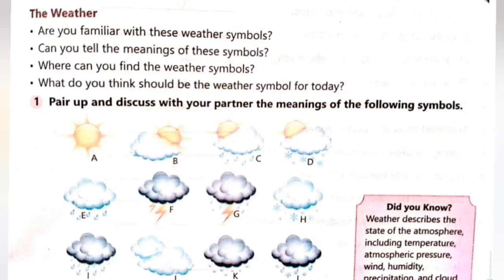Agar left side pe aap dekhen, A se hum start karte hain jahan pe sun bana hua hai, to yeh hamara symbol show karta hai sunrise ko, yani ke sunny day ko. B pe dekhen — B mein suraj jo hai wo gurub ho raha hai, to yeh sunset ko show kar raha hai. Next is C — C mein rain ke drops aapko nazar aa rahe hain, upar cloud hai aur sun bhi hai, to yeh mixed rain show kar raha hai. D ko kahenge hum partly cloudy — partly cloudy ka yeh icon hai.